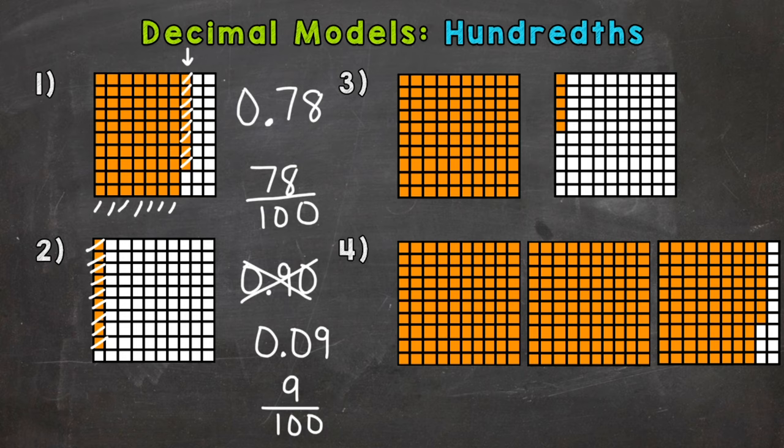On to number three. With numbers three and four, we actually have whole numbers and then a decimal or fraction. For example, number three, our first square here is completely filled in. So that represents one whole. Then we have our decimal portion over here. We have one hundredth, two hundredths, three hundredths, four hundredths, five hundredths. So one whole and five hundredths. We would represent that as one and five hundredths.